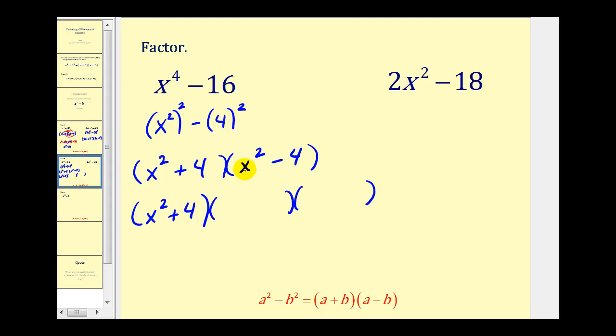x² is a perfect square and so is 4, so we'd have x plus 2 and x minus 2. Remember 2² is equal to 4. So this resulted in three binomial factors.